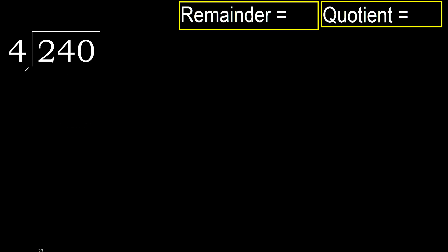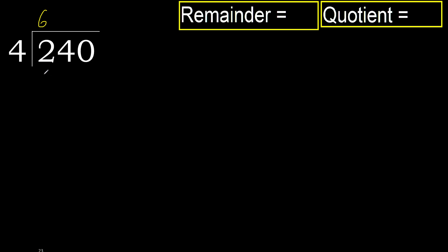240 divided by 4: 2 is less, therefore next. 20: 4 is not less, therefore with the 20 — 4 multiplied by which number is nearest to 20 but not greater? 4 multiplied by 7 is 28, which is greater. 4 multiplied by 6 is 24, which is not greater — ok.